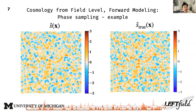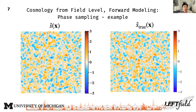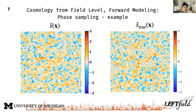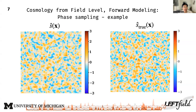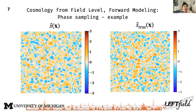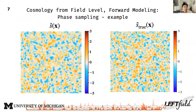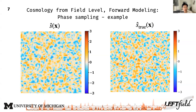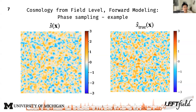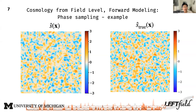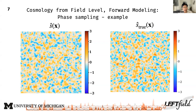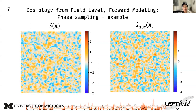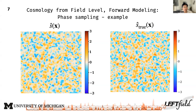Let us see how the inference framework works in practice. On the right I'm showing a slice through the true initial conditions of the data, and on the left I'm showing inference samples — realizations of these initial conditions — all compatible with the observed data delta_d. You can see that the samples are similar but not exactly identical to the truth.